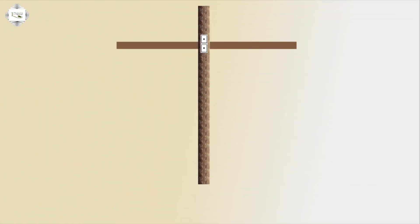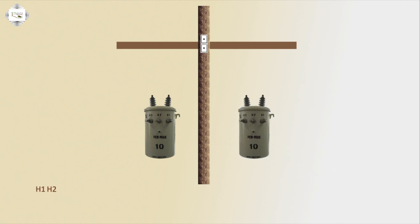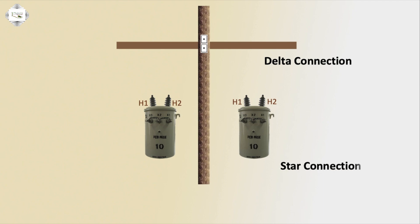At the electric pole, the transformer connection has the first transformer and second transformer. Each transformer terminal has two terminals: H1-H2 and H1-H2. The secondary coil of the second transformer — with two coils — has the high voltage side in delta connection.